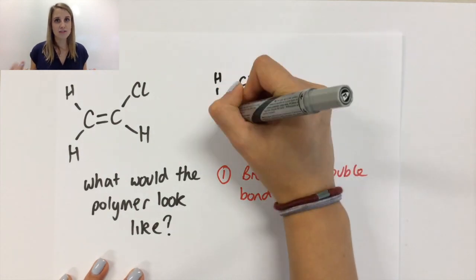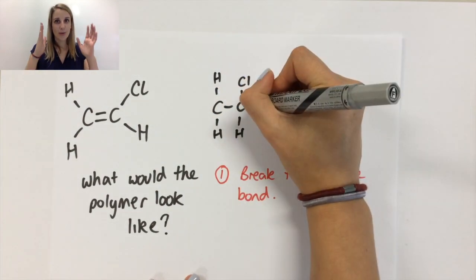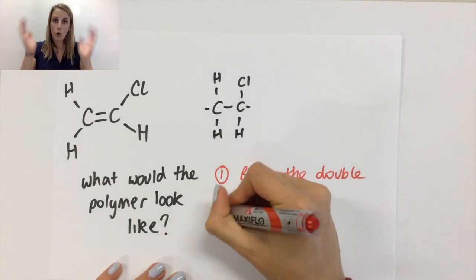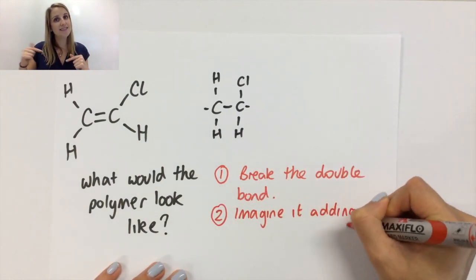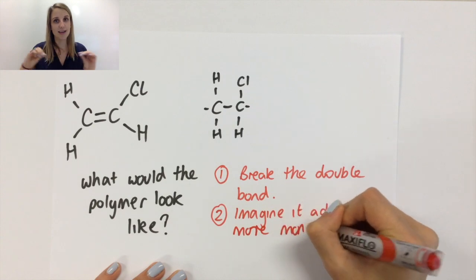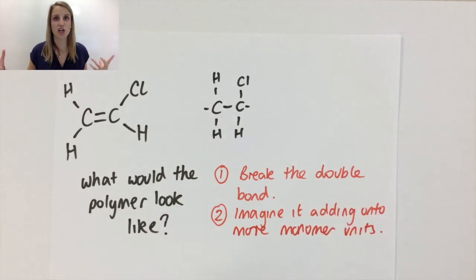If I imagined, the second step, that I've got three of these that have all opened up their double bonds, then you can see how they would join together to make this big long continuous chain.